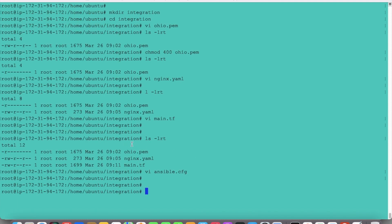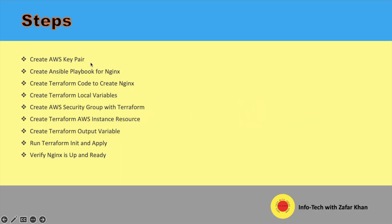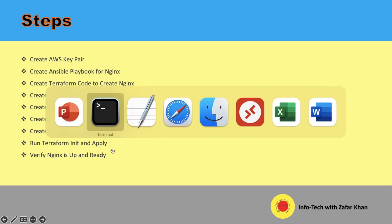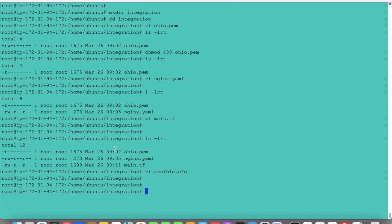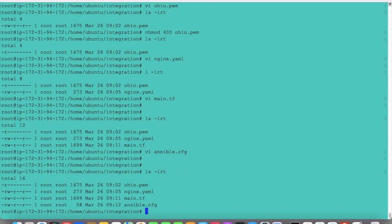Everything we have created now. The key pair is already shown, the playbook is already written, and the Terraform code is also created — variables, security group, AWS instance, and output all are under the Terraform code. Now we will run it. First we will initialize it and then apply, and check whether Nginx has been installed or not. So all four files are there.